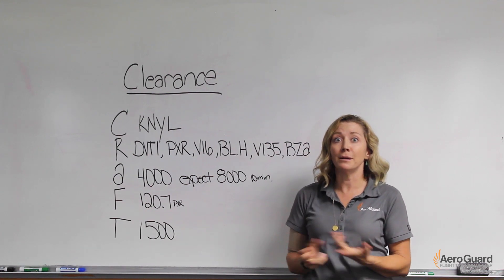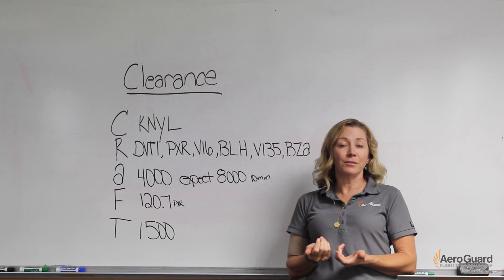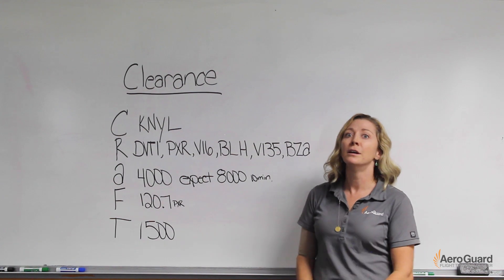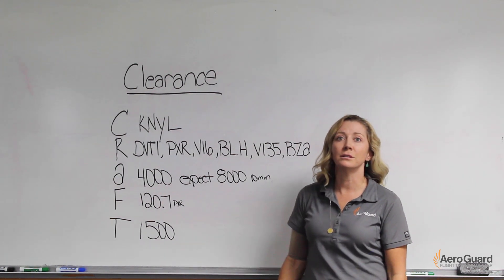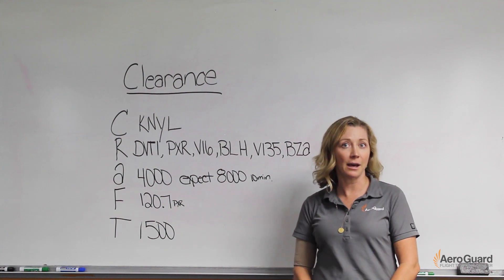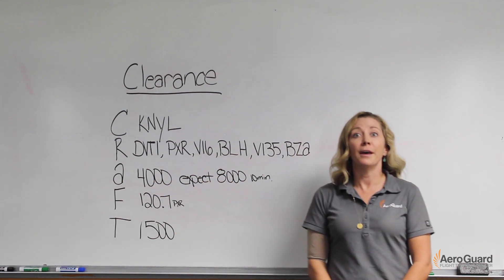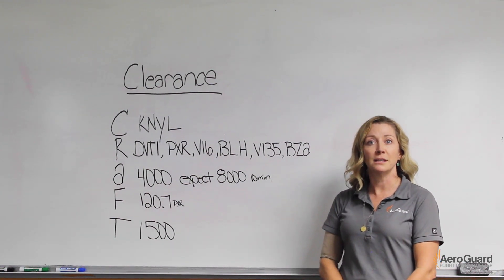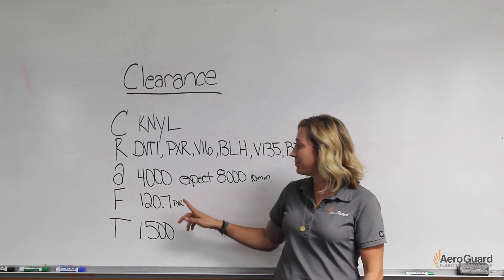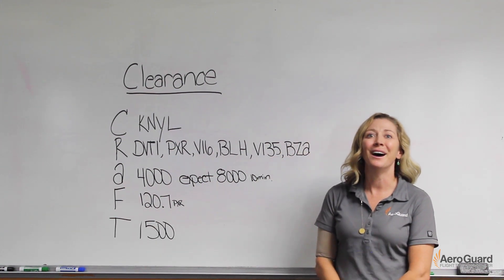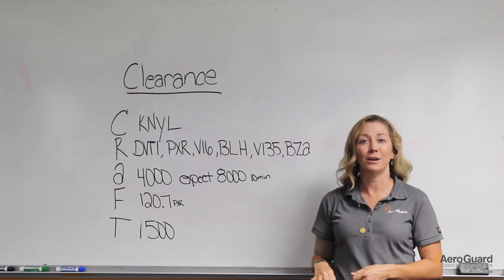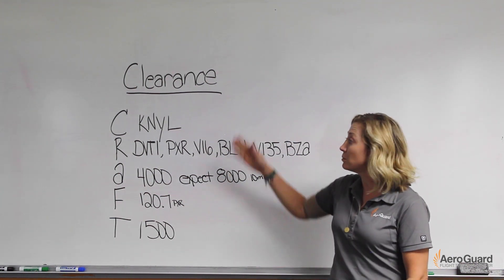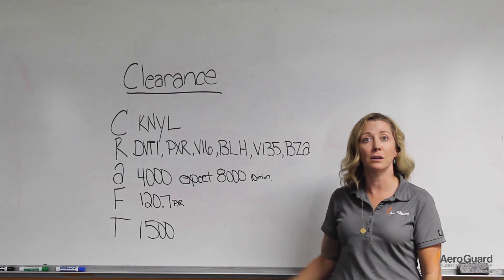Next is the route — this may or may not be the route you filed, and may contain radar vectors to a fix, a direct to a fix, or instructions to a certain point as filed. The A stands for altitude — sometimes they'll give you an initial altitude and an expected altitude. The F is for frequency, your next frequency after departing tower or the CTAF channel. And T is your transponder code — a discrete code that identifies you on radar, allowing ATC to track you and attach your clearance and instructions to it. That's what makes up a CRAFT clearance.